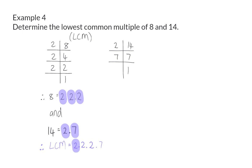So, here we have 2 times 2 times 2, which is 8, that is then multiplied by 7 and that will give us 56.